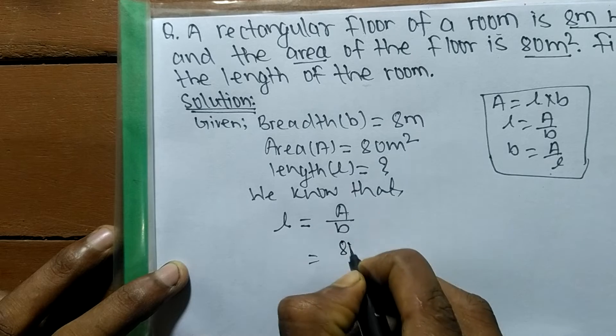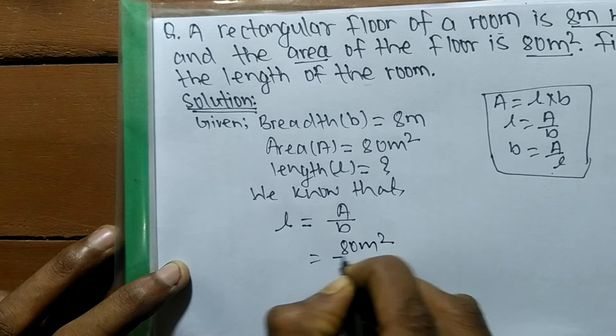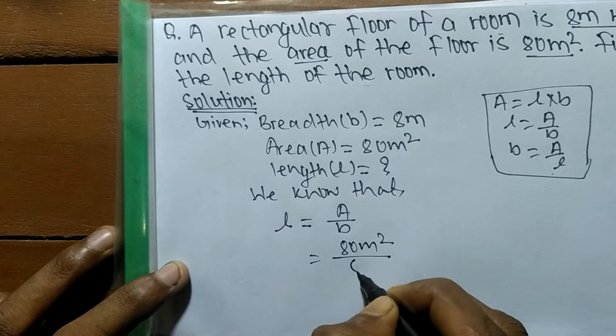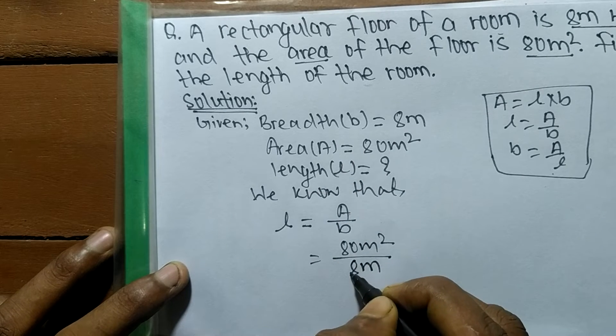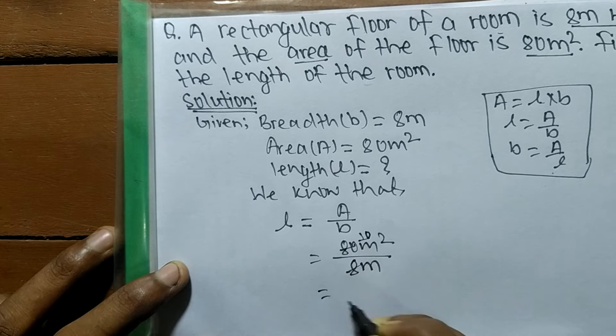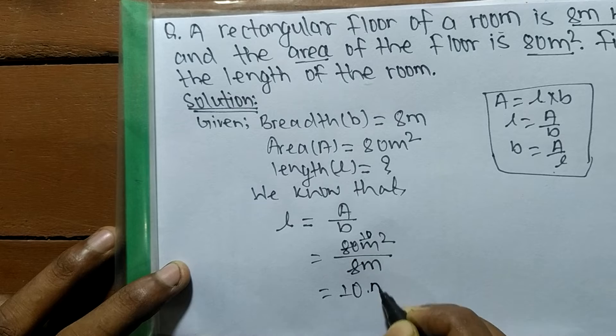A, which is the area, equals 80 square meters divided by b, which is the breadth of 8 meters. So 80 divided by 8 equals 10. It is equal to 10 meters.